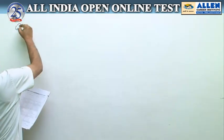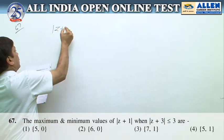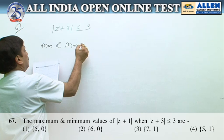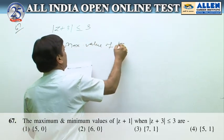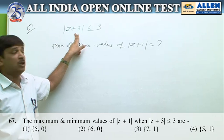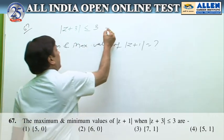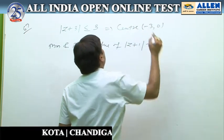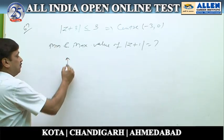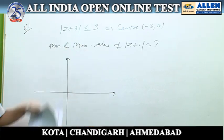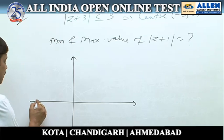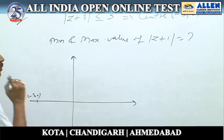Question number 67: it is given that |z + 3| ≤ 3, and we are asked to find the minimum and maximum value of |z + 1|. The inequality represents a circle whose center is (−3, 0) and radius is 3. Drawing this circle, the center is at approximately (−3, 0) and the radius is 3.